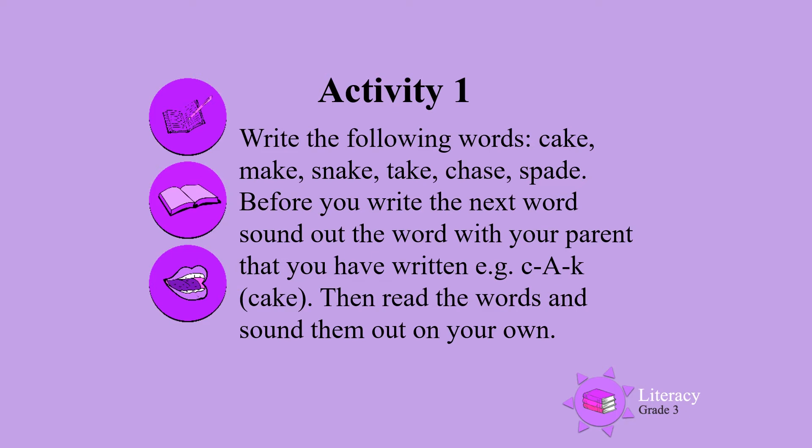Before you write the next word, sound out the word with your parent that you have written. For example, cake — C-A-K — cake. Remember, the silent E makes that short A sound change to a long A sound. So we get C-A-K — cake.